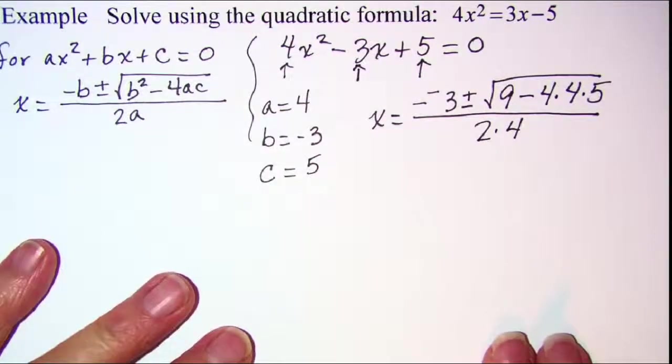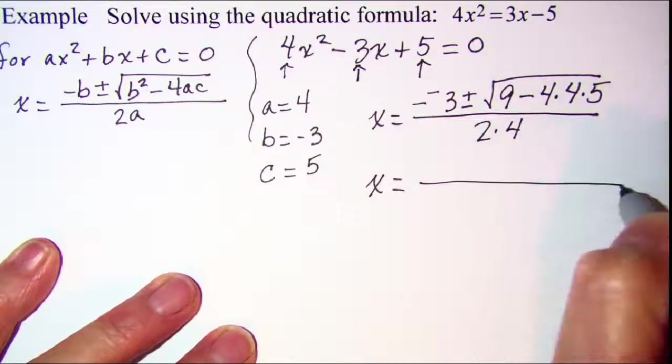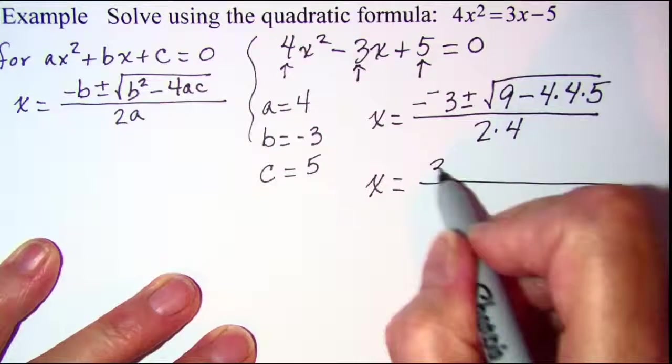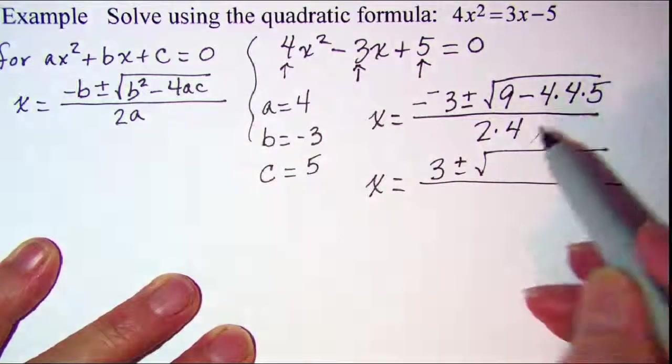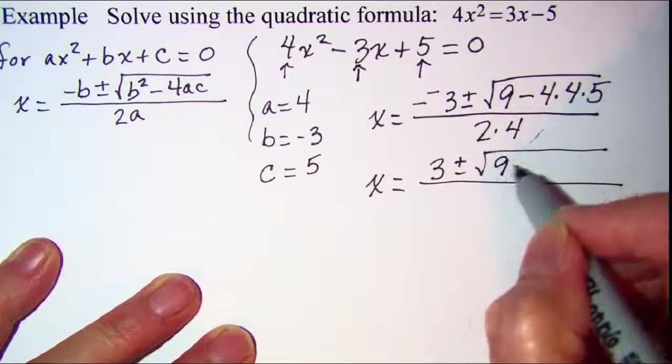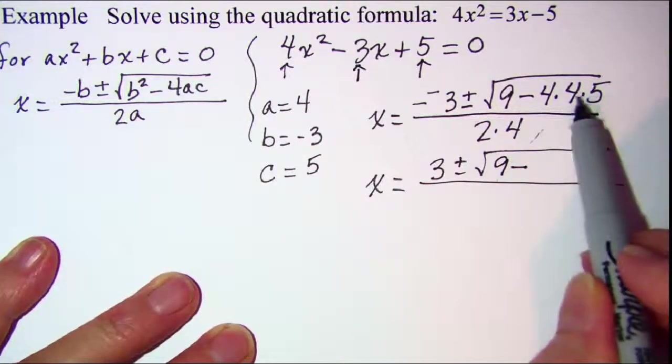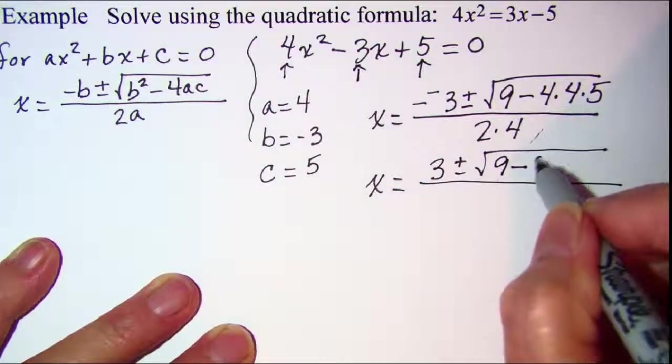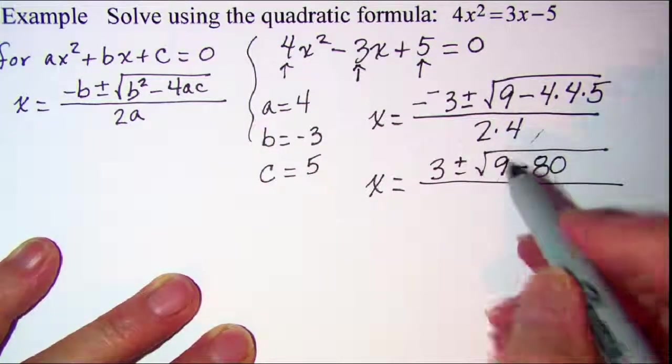Now I just need to do the math. X is equal to minus minus, which is a plus, so I have 3 plus or minus the square root of—now I need to do this multiplication first, so I'll just copy 9, subtract 5 times 4 is 20, times 4 is 80, and then 2 times 4 is 8.